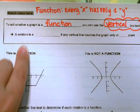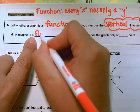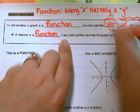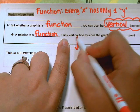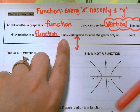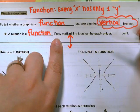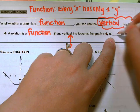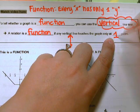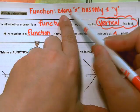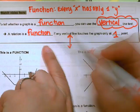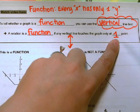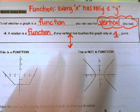A relation is a function — every x has only one y — if any vertical line drawn through the graph anywhere will only touch the graph at one point. Every x has only one y, so if I draw a vertical line anywhere over the graph, it should only touch once if it is a function.